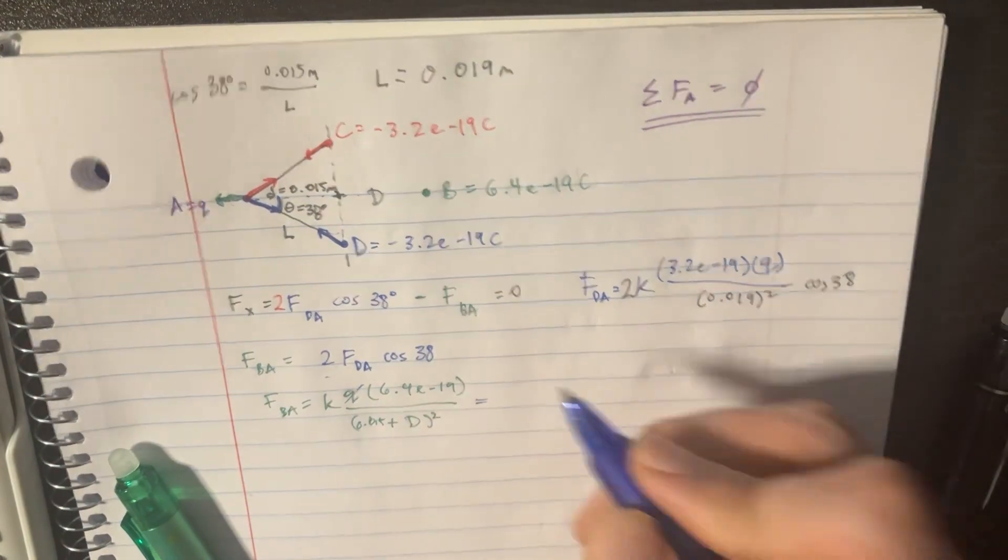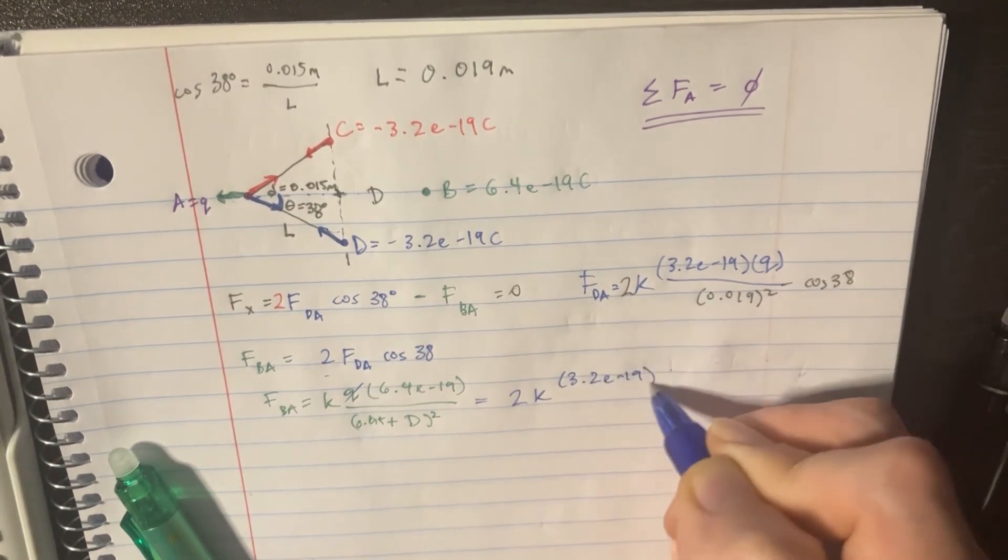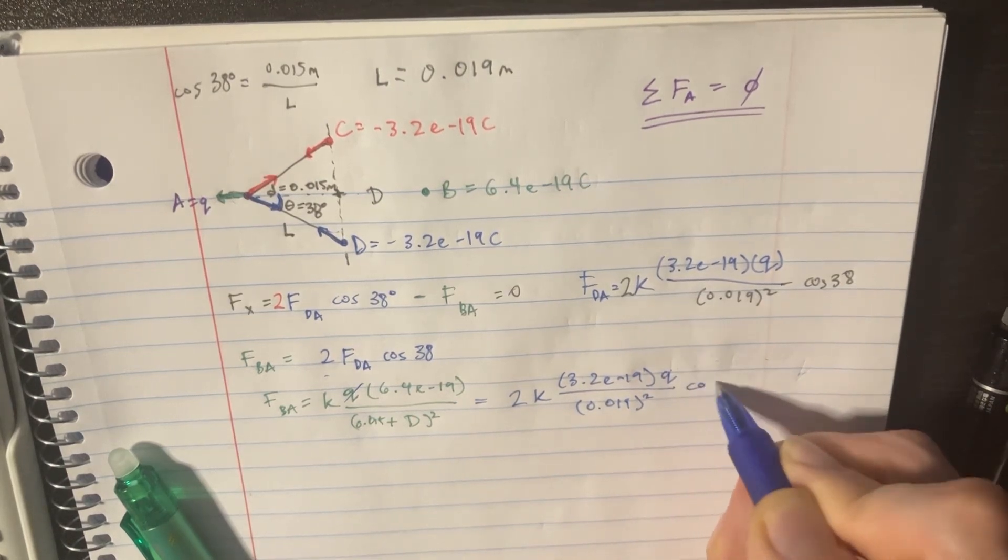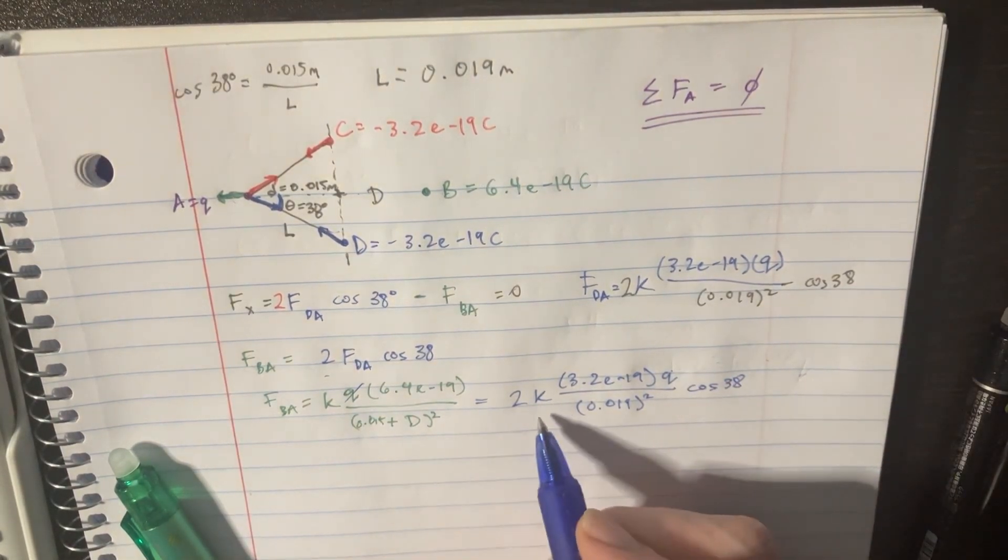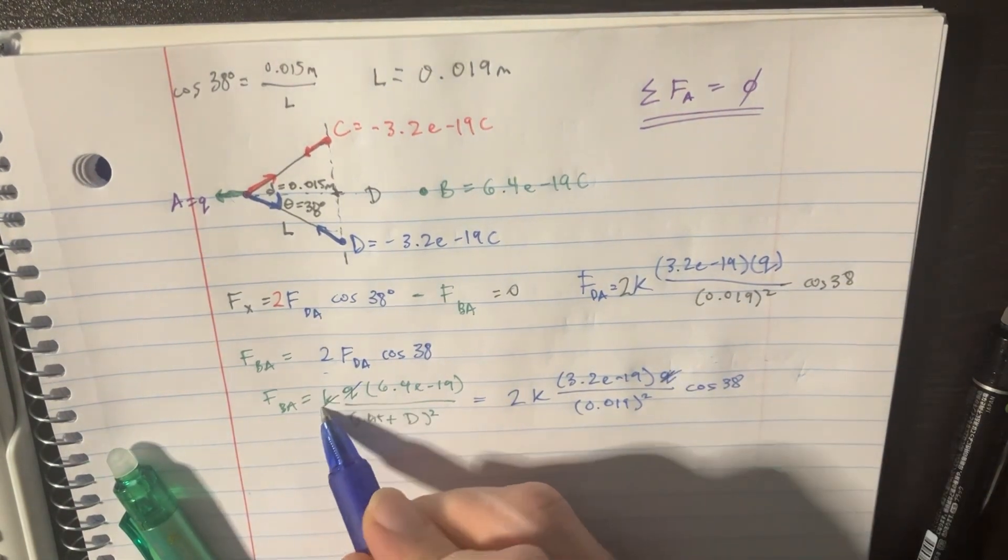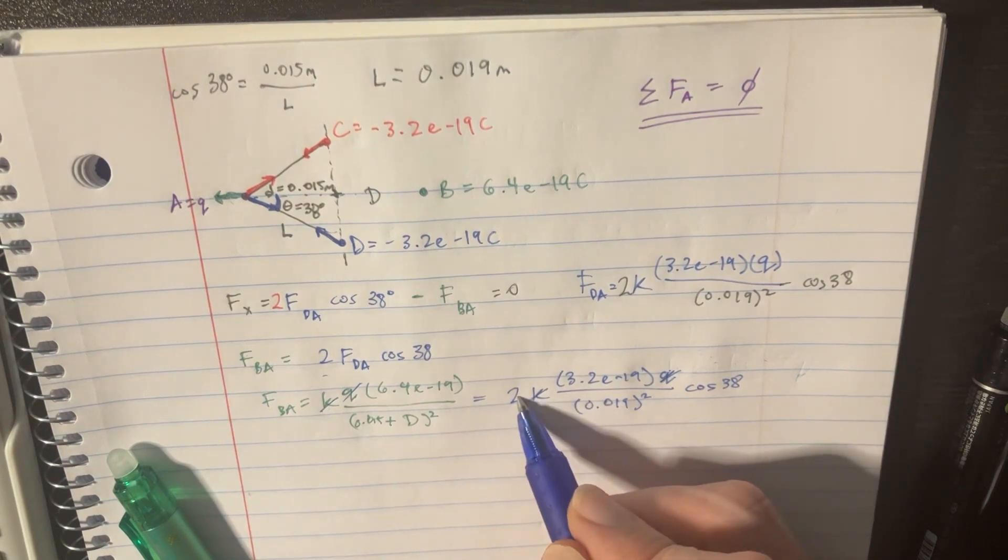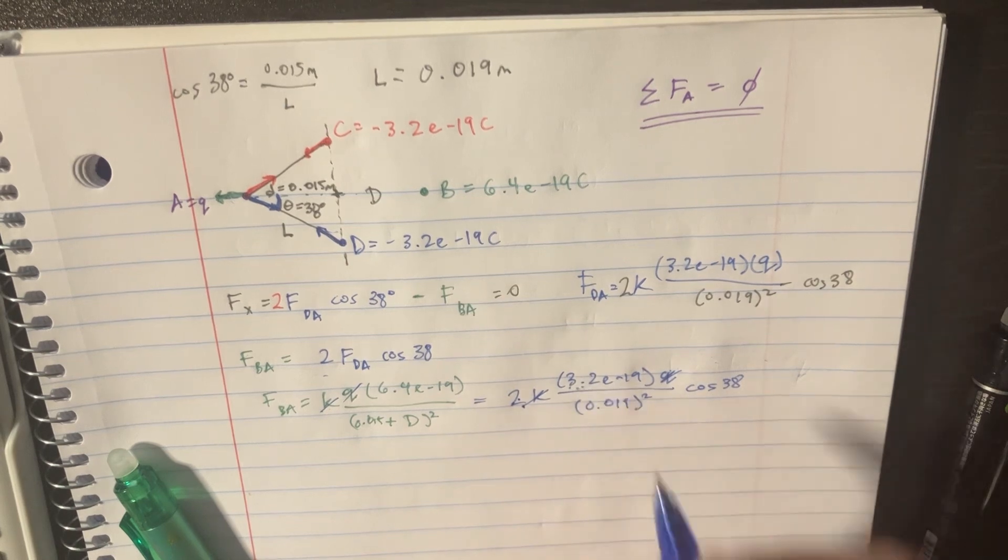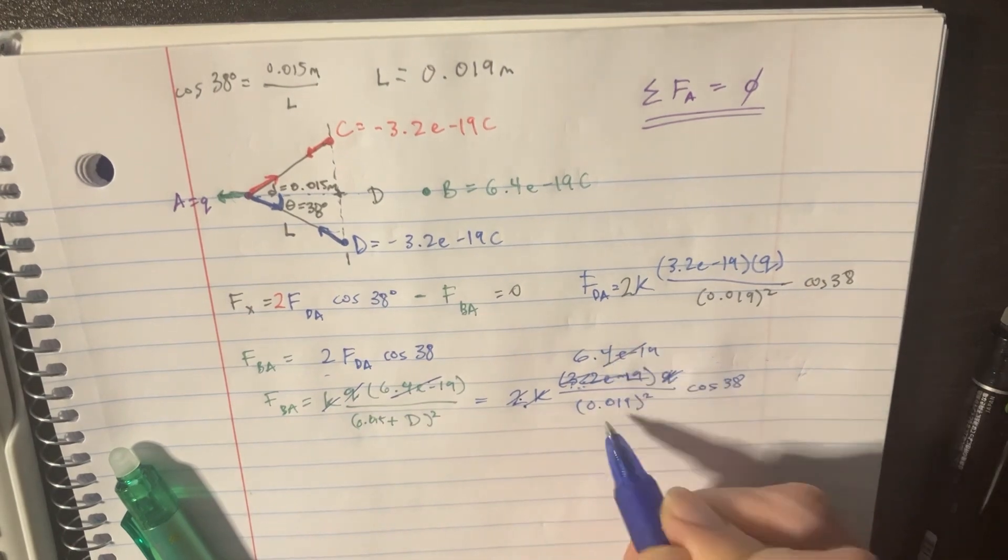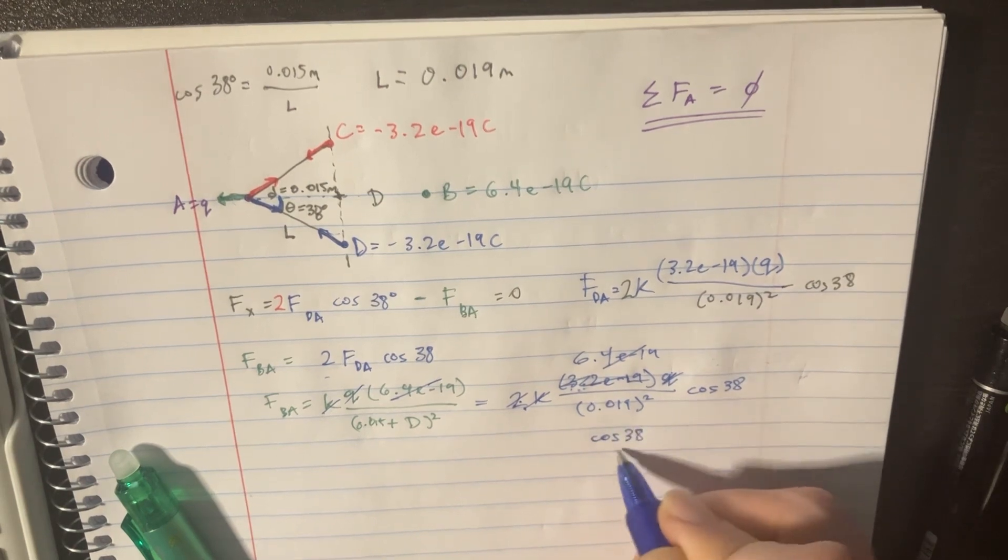Because we figured that this is equal to 2K times 3.2e to the negative 19 Q, divided by 0.19 squared cosine of 38. And we can see that Qs cancel. You can see that the Ks cancel. And if we multiply 2 times that, we actually get 6.4e to the negative 19, which means that these two cancel.